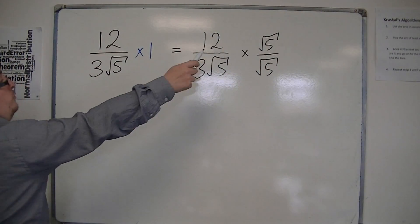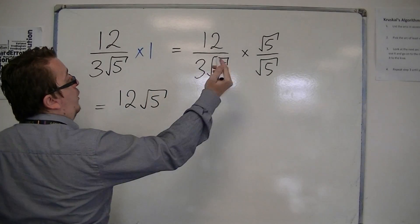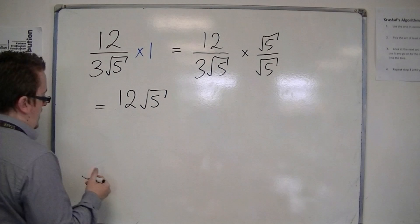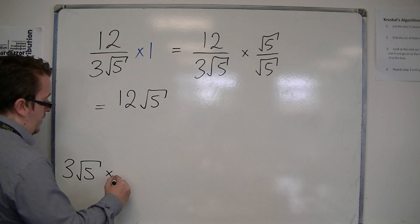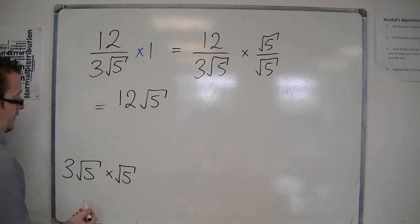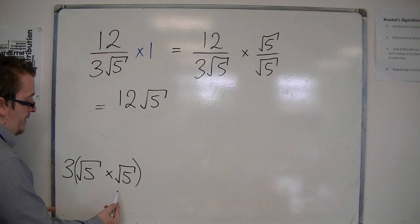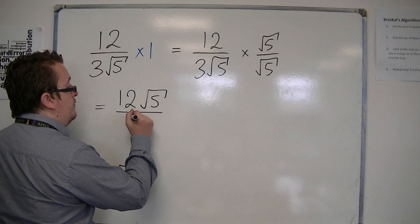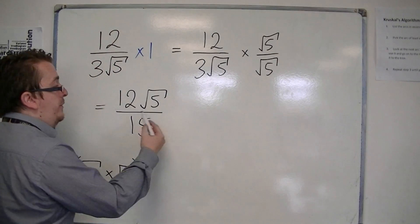So we're going to get 12 times root 5 over 3 root 5 times root 5. Now let's just make sure we're happy with this. 3 root 5 times root 5. So this is 3 lots of root 5 times root 5, which is the same as 3 times 5. So this is 12 root 5 over 15. That's 3 root 5 times root 5 is 15.